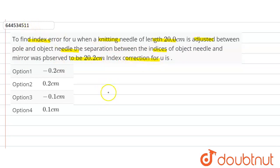So we have to find the index correction. Index correction is equal to observed reading minus actual reading.